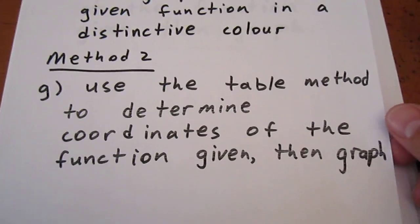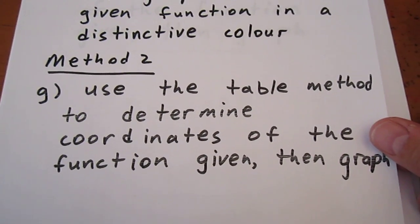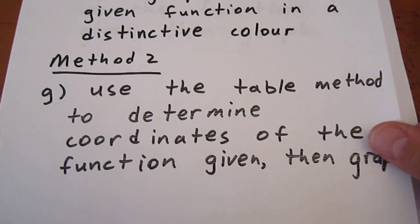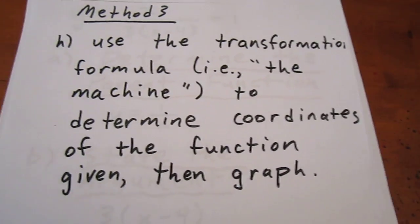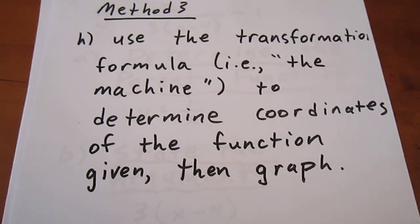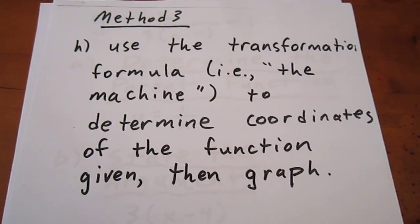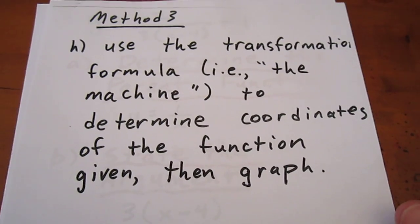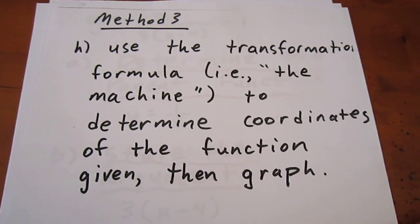Second, we're going to use a table method that jumps straight to the coordinates of the image curve. And last but not least, we're going to use the transformation formula, which is maybe even a little quicker than the table at jumping straight to the coordinates.